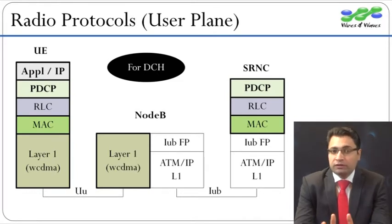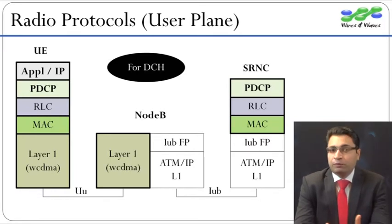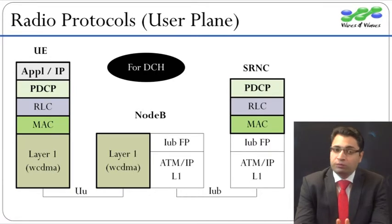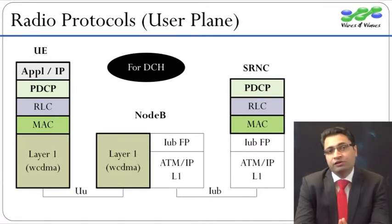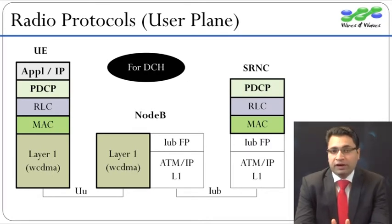Then the RLC layer segments this big IP packet into small blocks. In this example of IP packet transmission, the RLC layer stores these RLC blocks until it receives a positive acknowledgement from UE. The RLC layer also performs ciphering, and after that it passes this data block to the MAC layer.